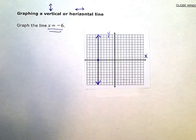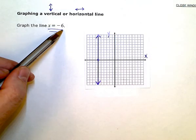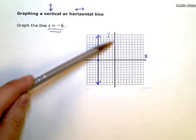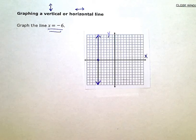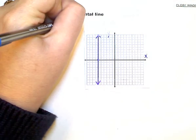If I was graphing a line that was y equals and then a number, it would be a horizontal line, going this way and crossing only the y-axis. So horizontal lines are y equals and then some constant.